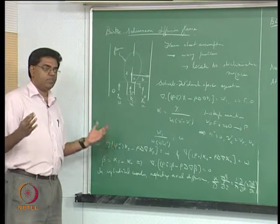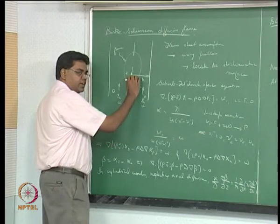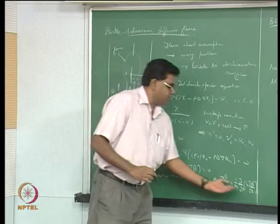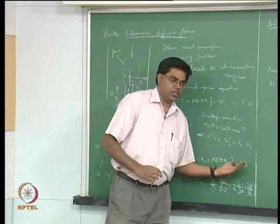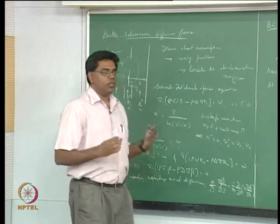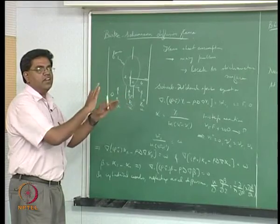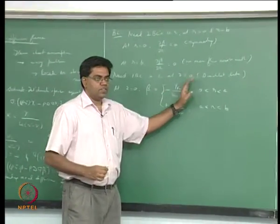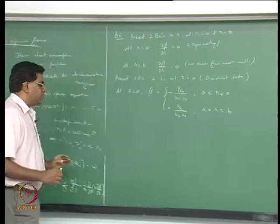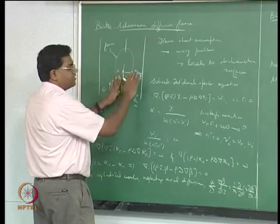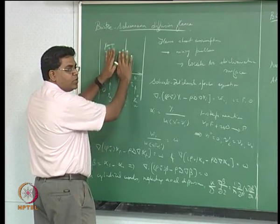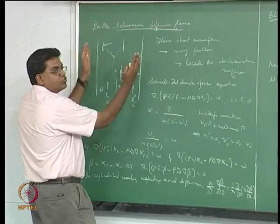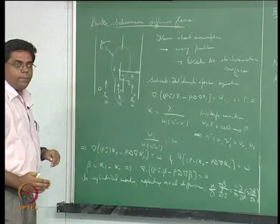This discontinuity is exactly what the mixing problem is about — all fuel on one side, all oxidizer on the other, beginning to mix by diffusion. Diffusion's job is to even out discontinuities, so it is perfectly valid to admit this discontinuity at the boundary. As we move into the domain, the governing equation smooths out this step.